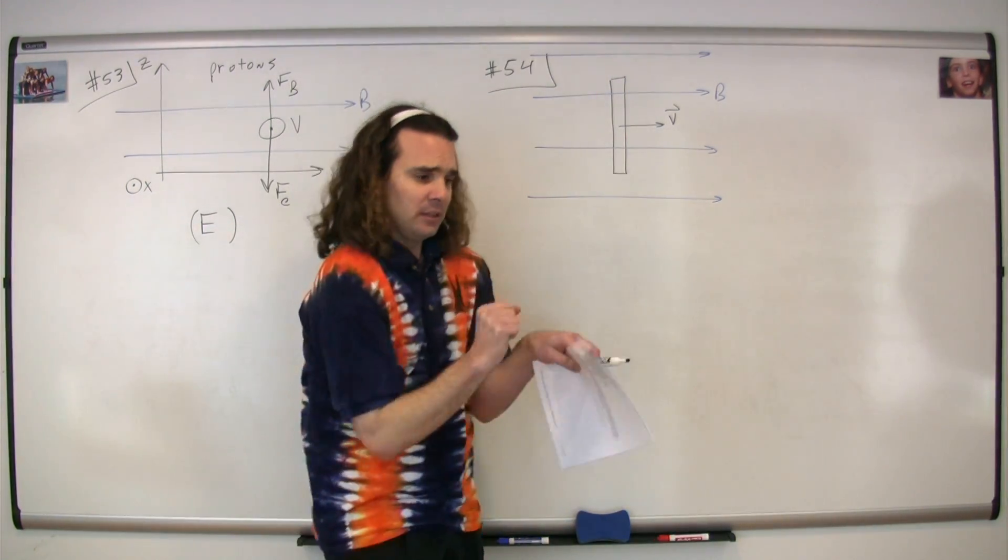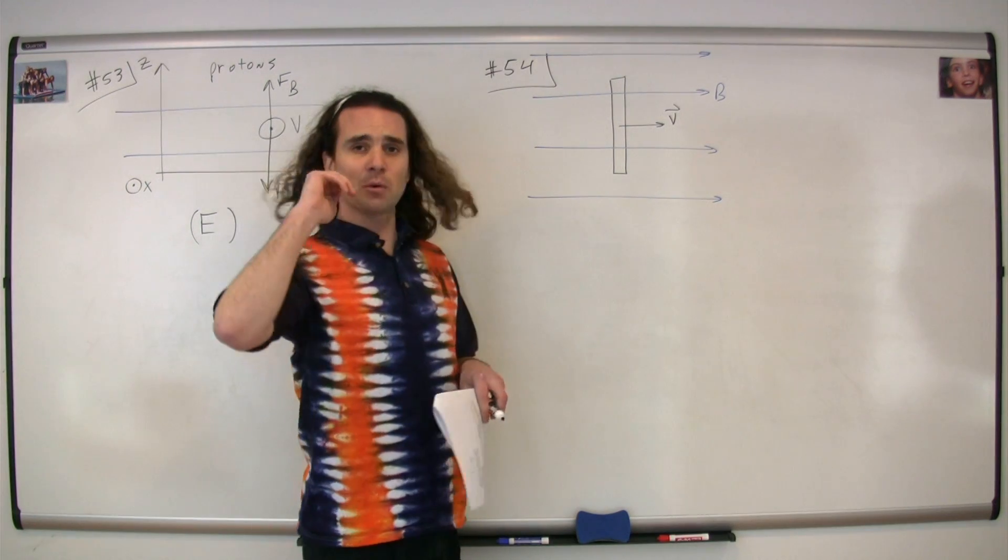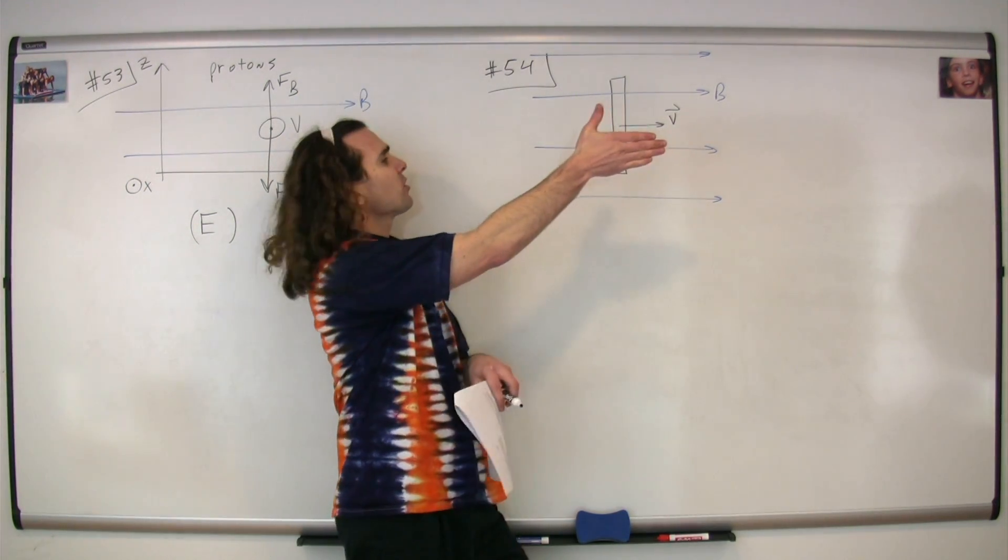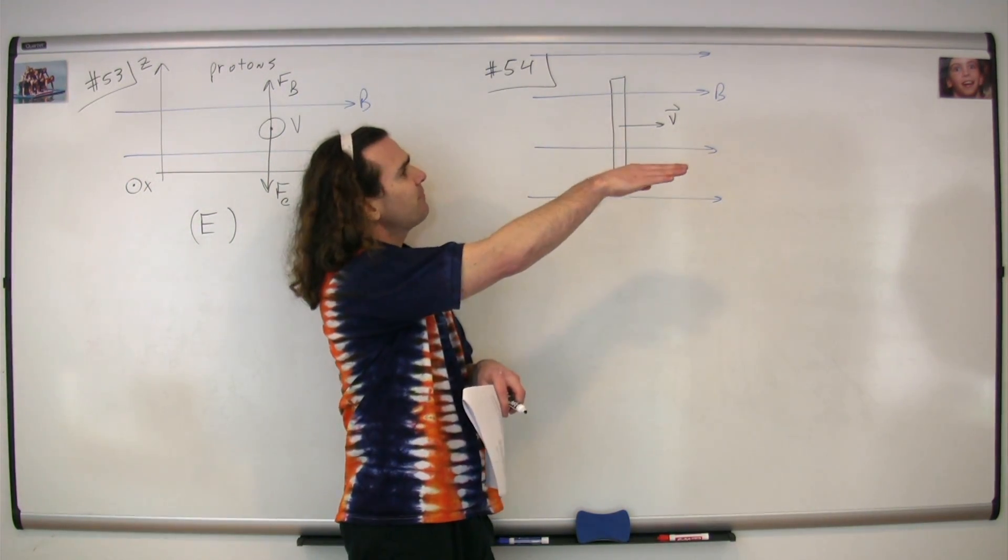The right hand rule. We are already limber, so we take our fingers, we point them of our right hand in the direction of the velocity, we curl our fingers in the direction of the magnetic field.